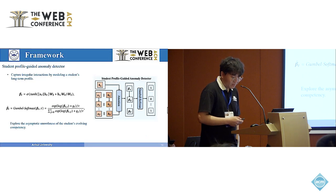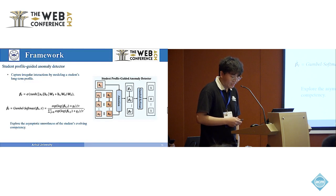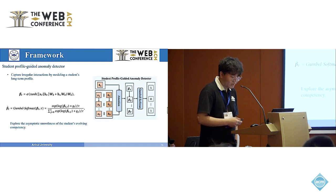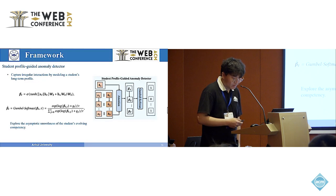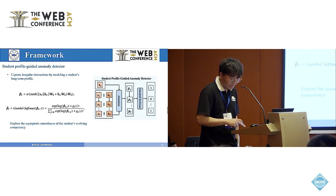The Student Profile Guided Anomaly Detector aims at capturing irregular interactions by modeling a student's long-term profile. Due to unique attributes of each student within the learning process, even under the same learning experience, different learning outcomes and memory patterns may be observed. We designed this detector to explore the asymptotic smoothness of the student's evolving competency. Specifically, we developed an attention module as a discriminator to detect inconsistency between the current learning stage and the student profile, using the student's representation as a query vector and assigning different attention weights to each learning encoding. Anomalous signals are also mapped to zero-one discrete signals using Gumbel softmax.